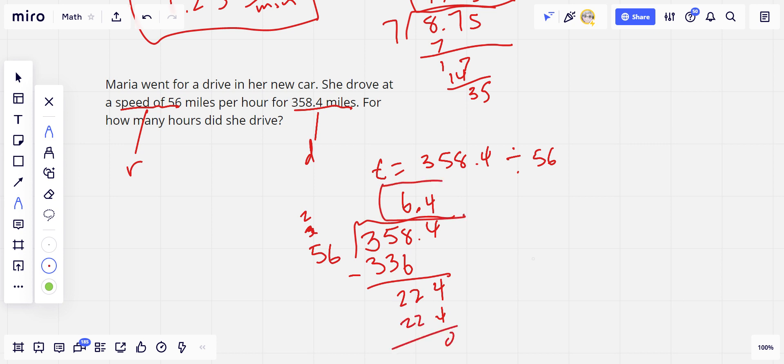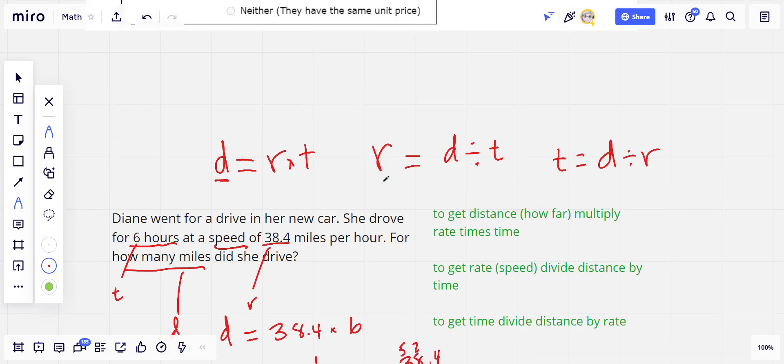So 6.4. And what we were trying to find was time. And because our rate was miles per hour, we know our time unit is hours. So when we give that answer, we'll give it as 6.4 hours. So that is a little bit of work with these distance, rate, and time problems.